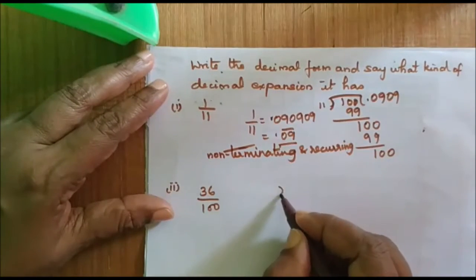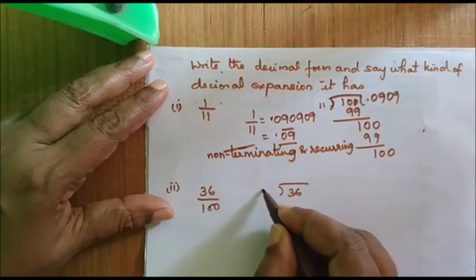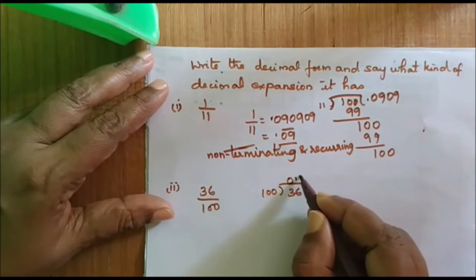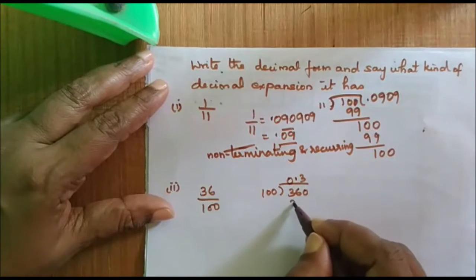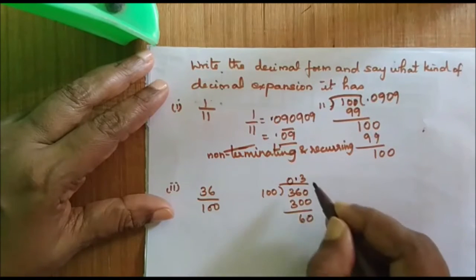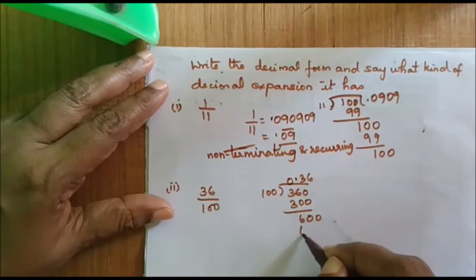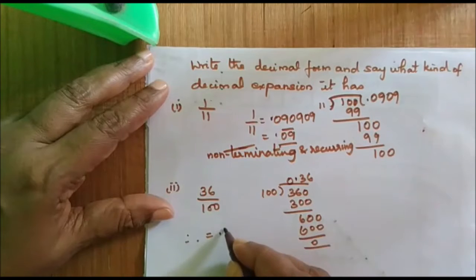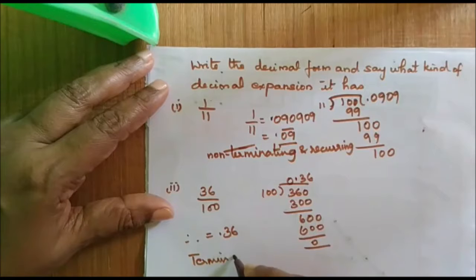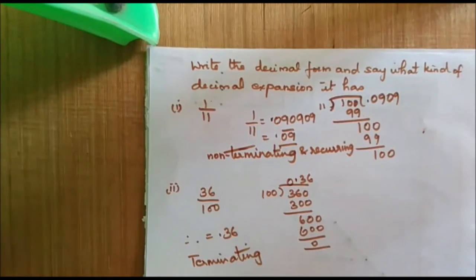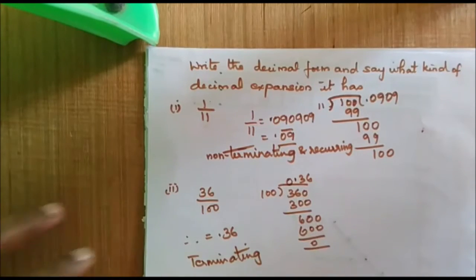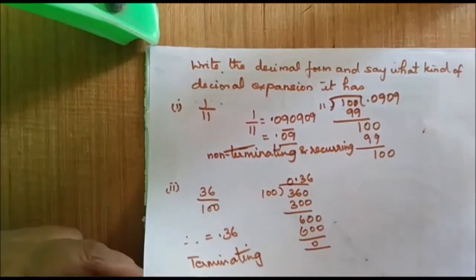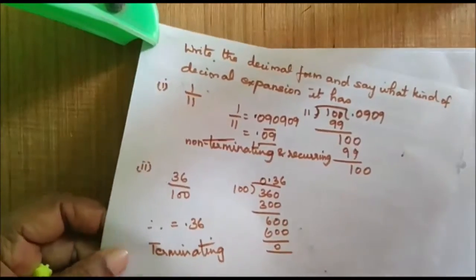Now let us take 36 divided by 100. It will go in this 3 times — I get remainder 60. It will go 6 times — remainder 40. Now I have got remainder 0. Therefore this is nothing but 0.36, and this is of the type terminating. So given any fraction, it satisfies one of the two conditions.